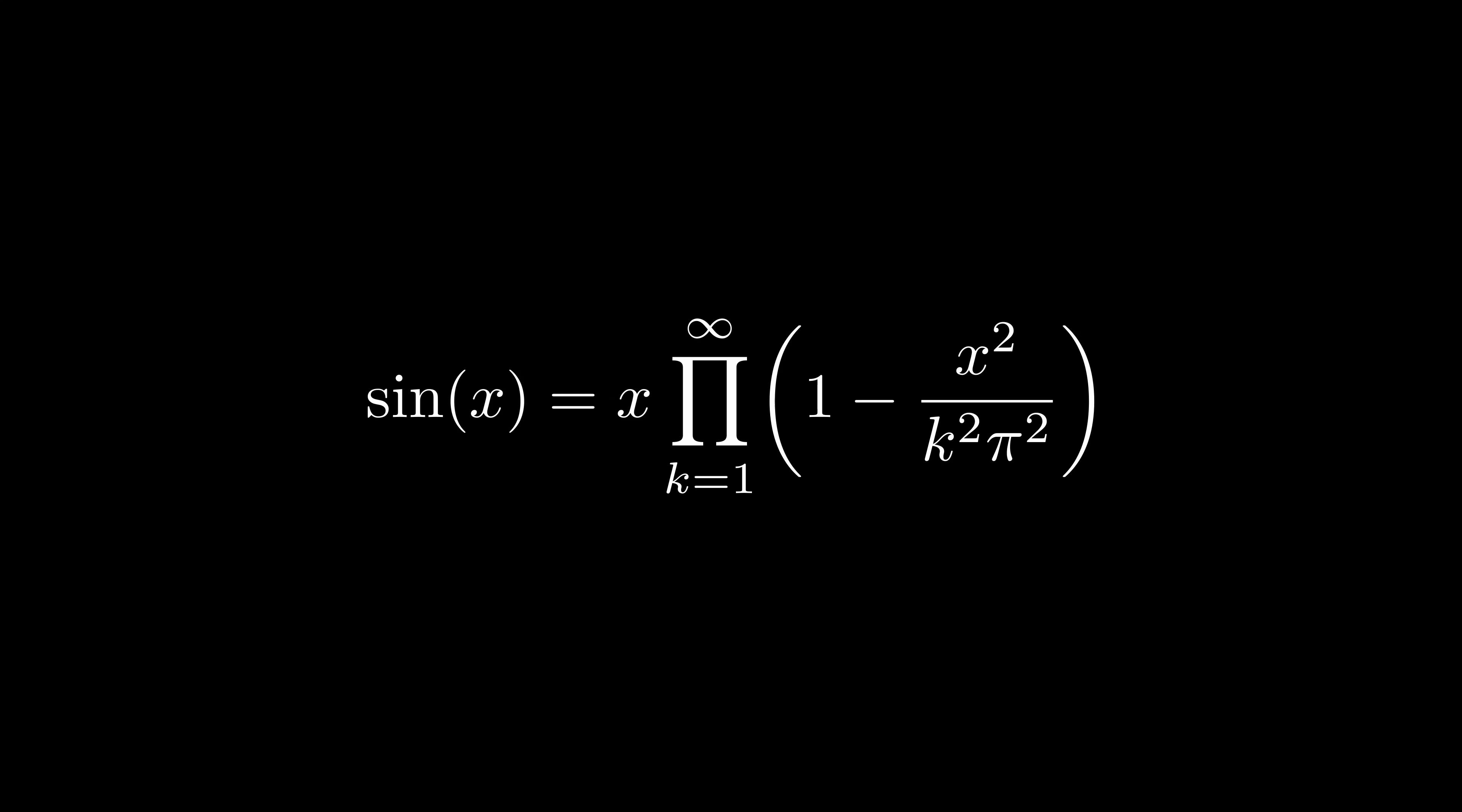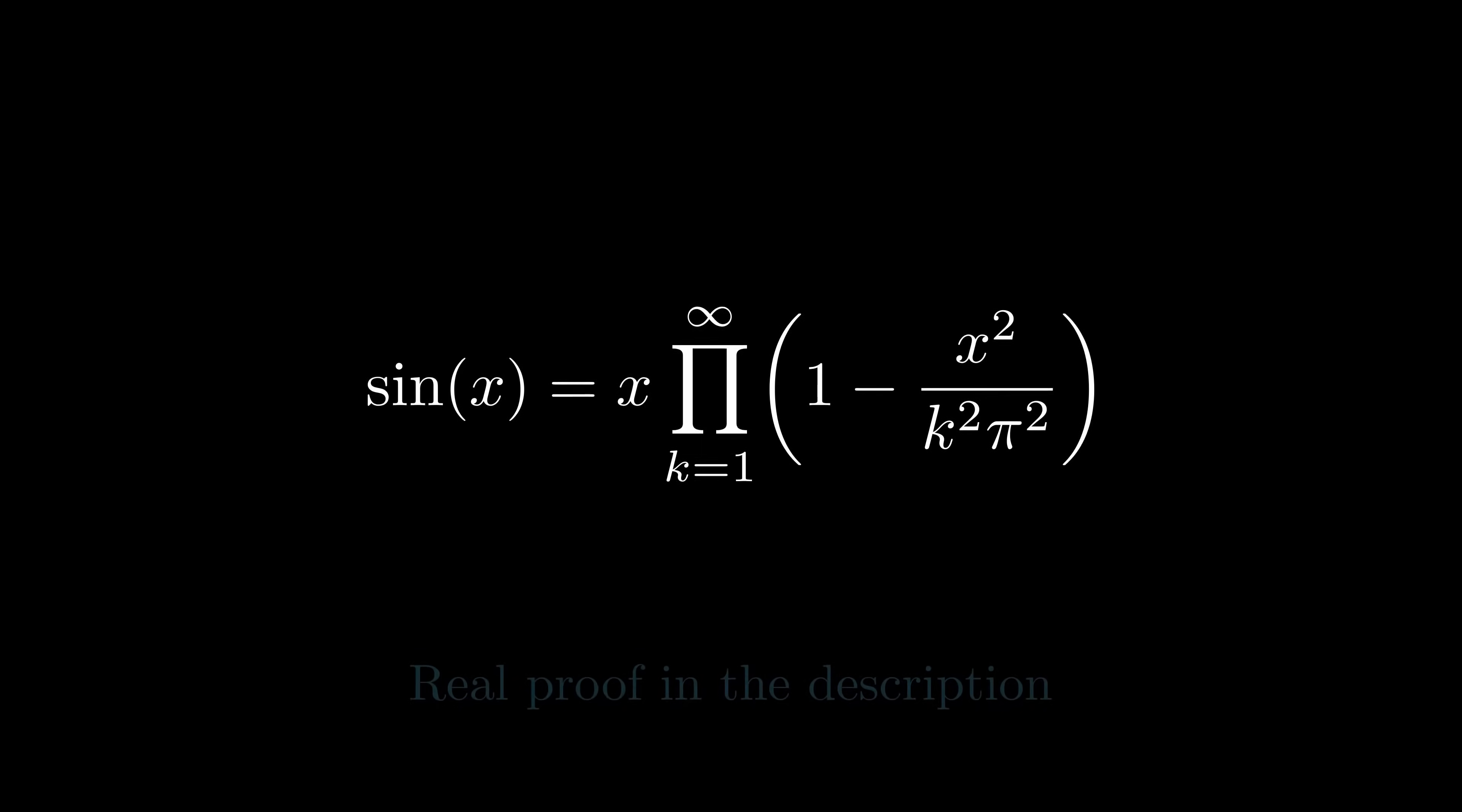Now, I'm well aware that this really wasn't a proof. Sine isn't a polynomial, so factoring isn't guaranteed to work like this. Therefore, saying that this expression equaled sine of x just because it has zeros in the same places is a bit of a stretch. Well, believe it or not, Euler himself never managed to rigorously prove this identity, and such a proof eluded mathematicians for a century. As such, I won't take it on myself to present a proof in this video, but I've linked a proof in the description for anyone who's curious.